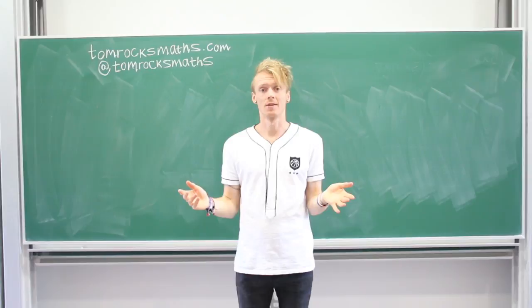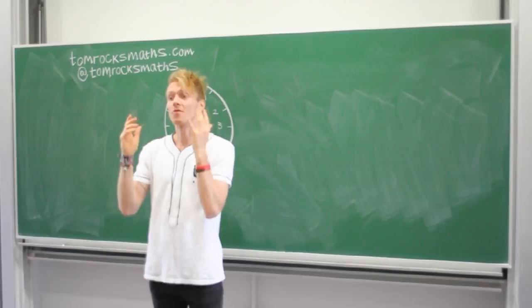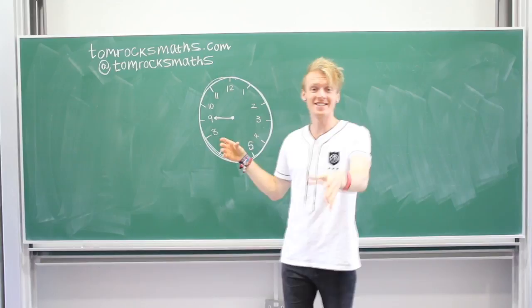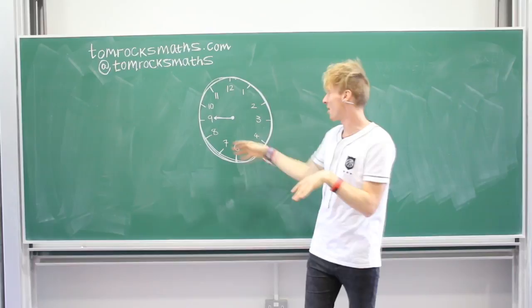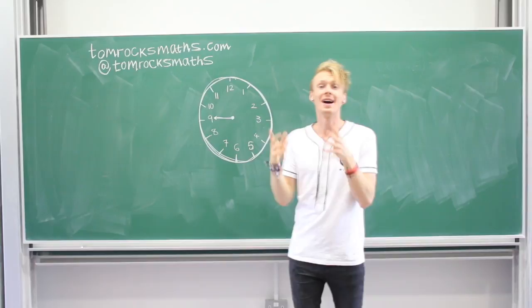To start with, let's think about an example that hopefully all of you will be familiar with, and that's going to be the 12-hour clock. Apologies for the circle — it was my best attempt. I have heard that if you can draw a circle it's a sign of madness, so I'm quite glad that I can't really draw one. But this is our 12-hour clock, and it's currently 9 o'clock, so our hand is pointing to 9.